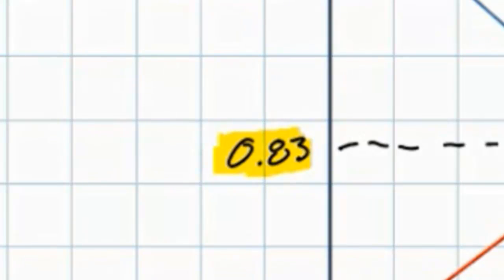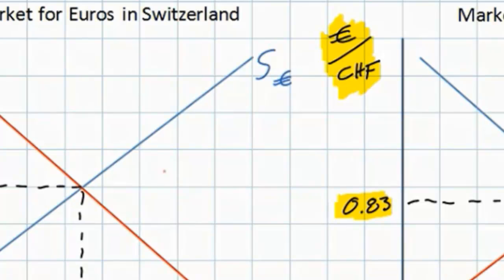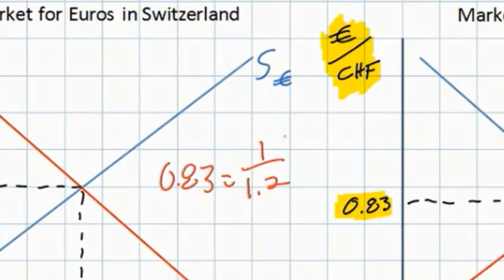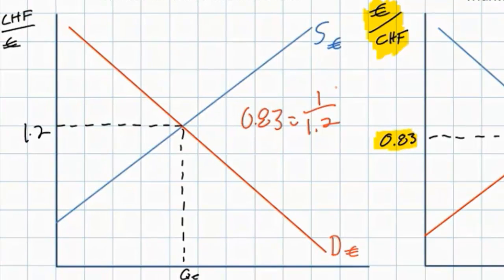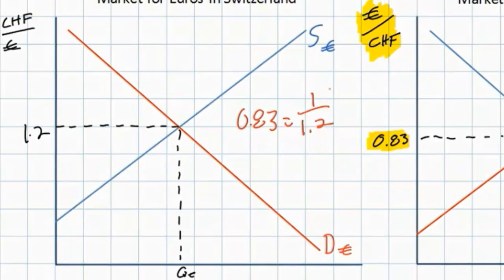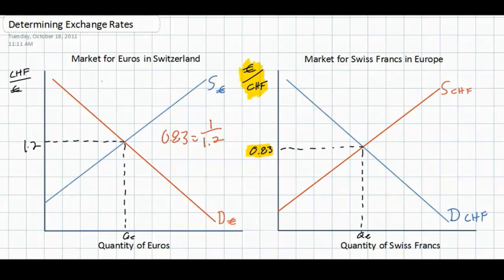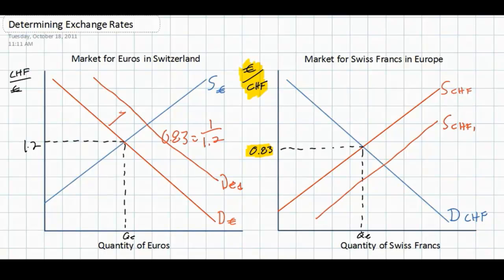This is the inverse of the exchange rate in the market for euros. In other words, 0.83 equals 1 over 1.2. This is clearly logical: if 1 euro costs 1 franc and 20 cents, then 1 franc costs 1 over 1.2, which is 83 cents. Anything that causes an increase in the demand for euros in Switzerland will cause an increase in the supply of francs in Europe. This is logical because if Swiss households wish to buy more European goods, they demand more euros and must supply more Swiss francs to the European market.